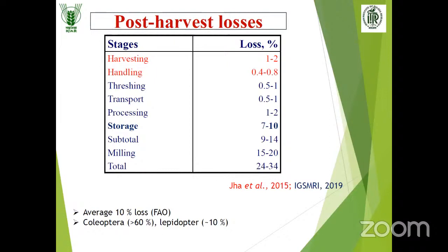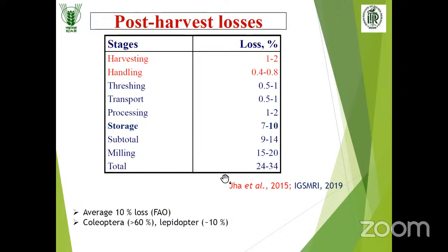There are different kinds of losses at each stage: during harvesting it will be 1 to 2%, during handling nearly 0.5 to 1%, threshing and transport are also included, and during milling it will be 15 to 20%. The total losses range from 24 to 34%.